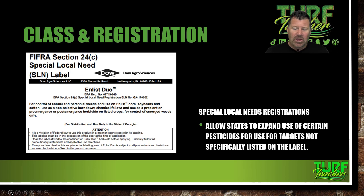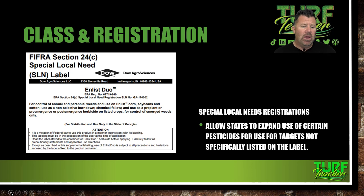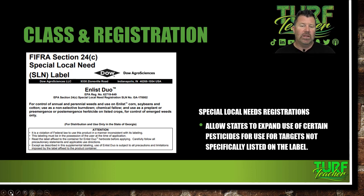Special local needs registrations will allow the state to expand the use of certain pesticides for targets not specifically listed on the label. Let's say you've got an insect affecting an agricultural crop and you know the pesticide will take care of it but it's not on the label — you can get one of these special local needs registrations. For example, Enlist Duo from Dow AgroSciences for control of annual and perennial weeds and use on Enlist corn, soybeans, and cotton — used as a non-selective burndown, chemical fallow, and as a pre-plant, pre-emergent, or post-emergent herbicide on listed crops.